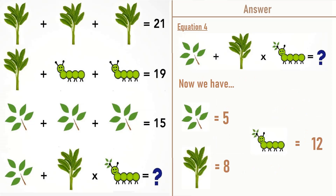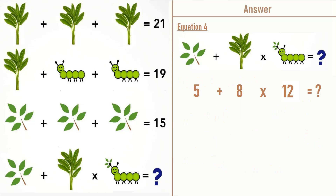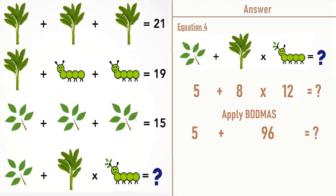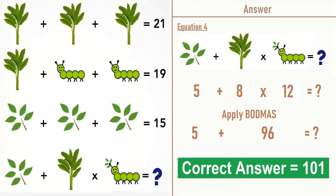So now we have: leaves with 5 leaves equal to 5, leaves with 8 leaves equal to 8, and a caterpillar with 8 legs and 4 leaves equal to 12. Putting all these values into equation number 4, we have 5 plus 8 times 12. Applying BODMAS, we do multiplication first: 8 times 12 is 96, plus 5 equals 101. So the correct answer of this puzzle is 101.